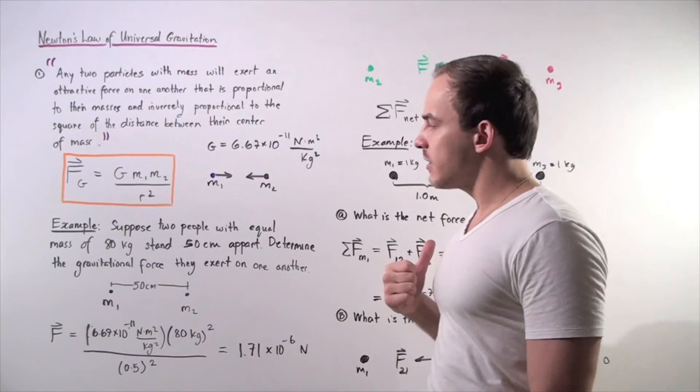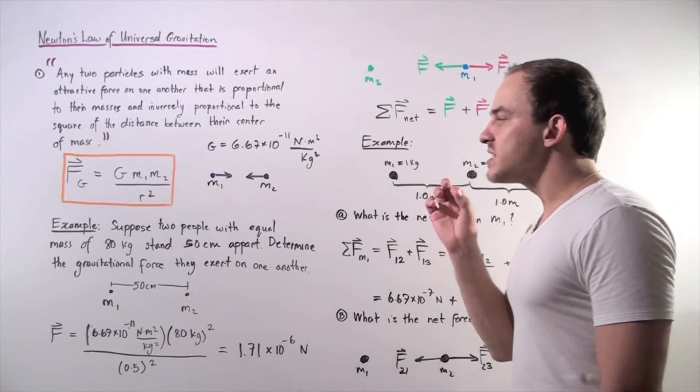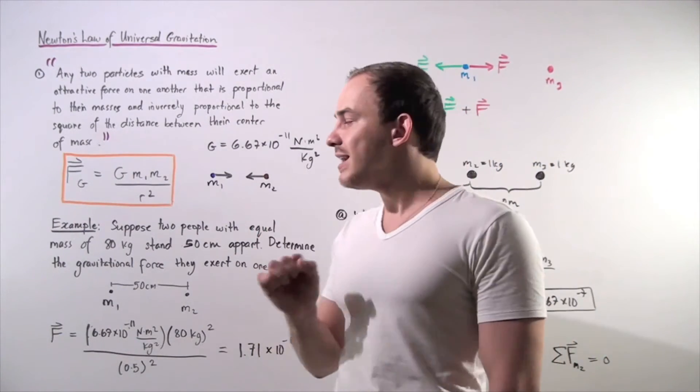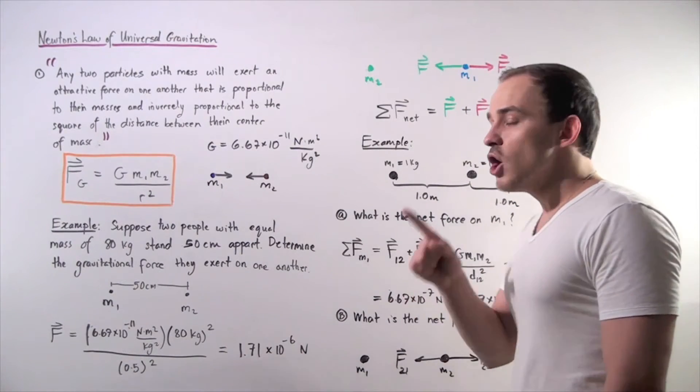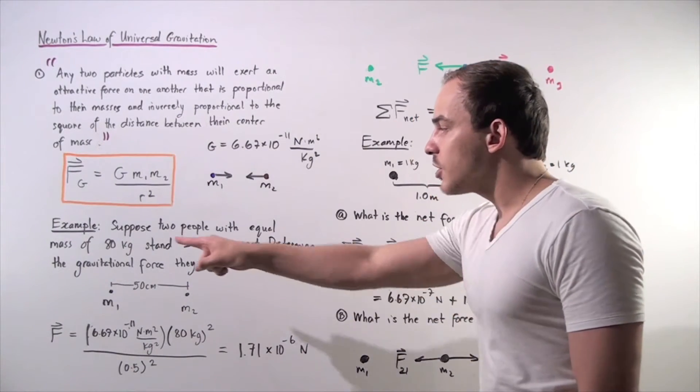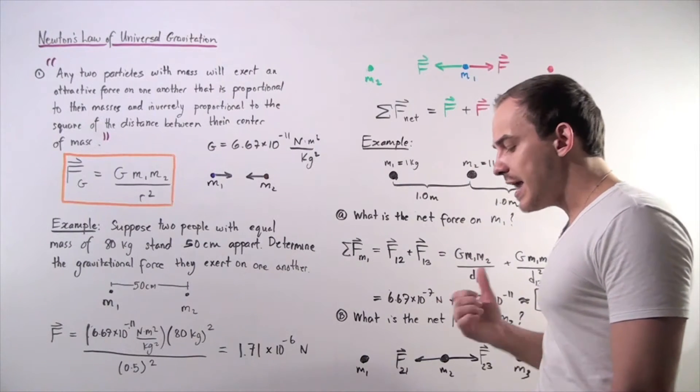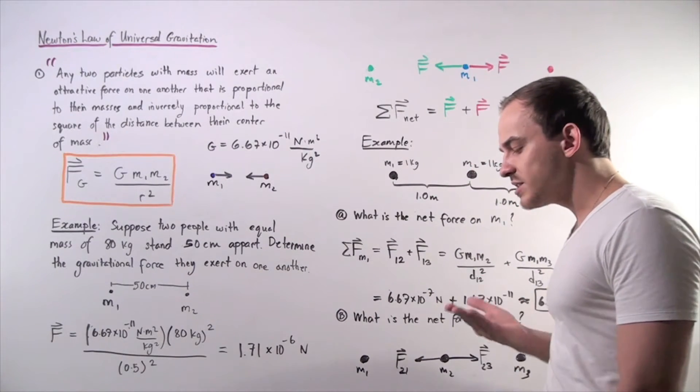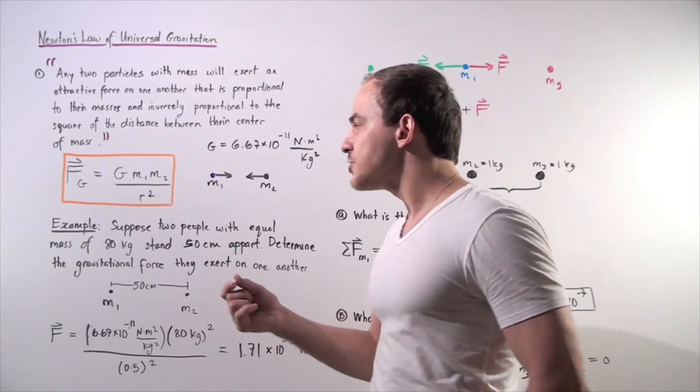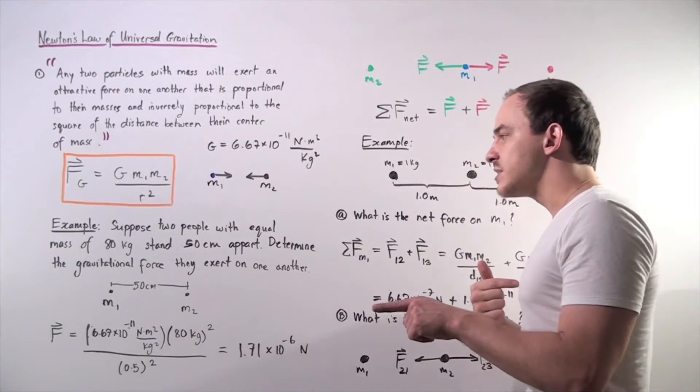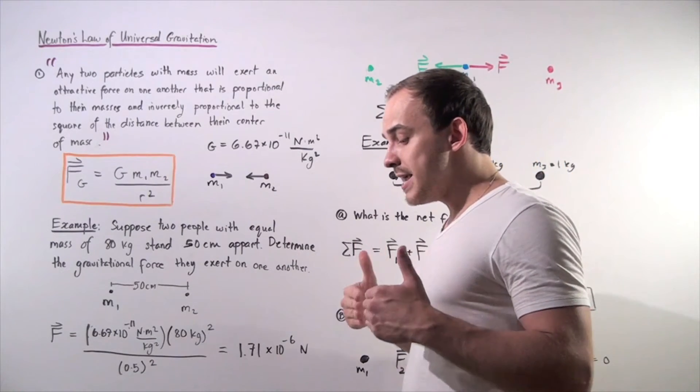Now let's look at the following example. Suppose two people with equal mass of 80 kilograms stand 50 centimeters apart. We want to determine the gravitational force they exert on one another.